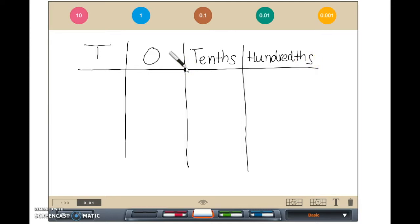I am going to start by modeling the number forty dollars and eighty-five cents. I am drawing four red circles in my tens place, eight red circles in my tenths place, and five red circles in my hundredths place.